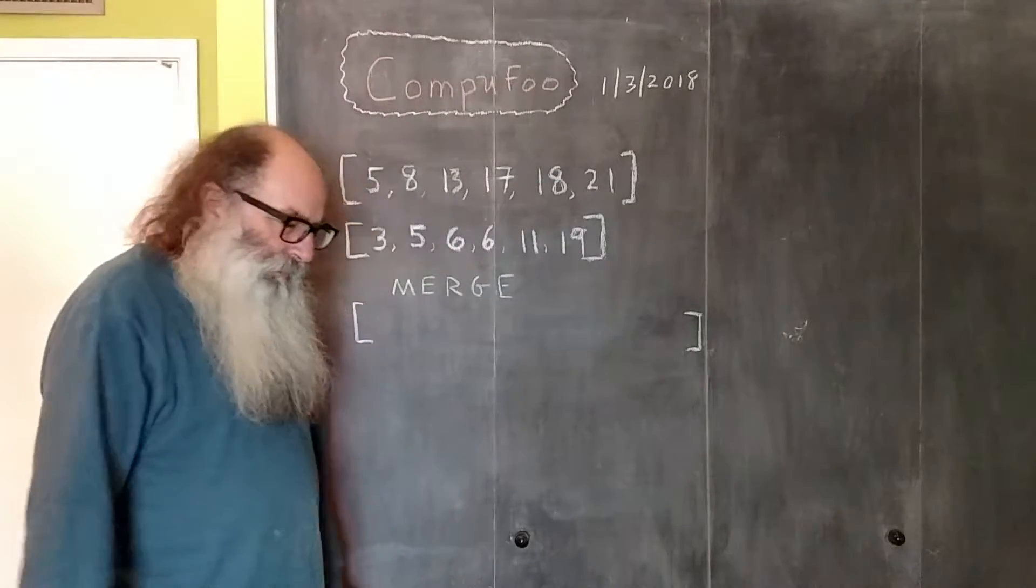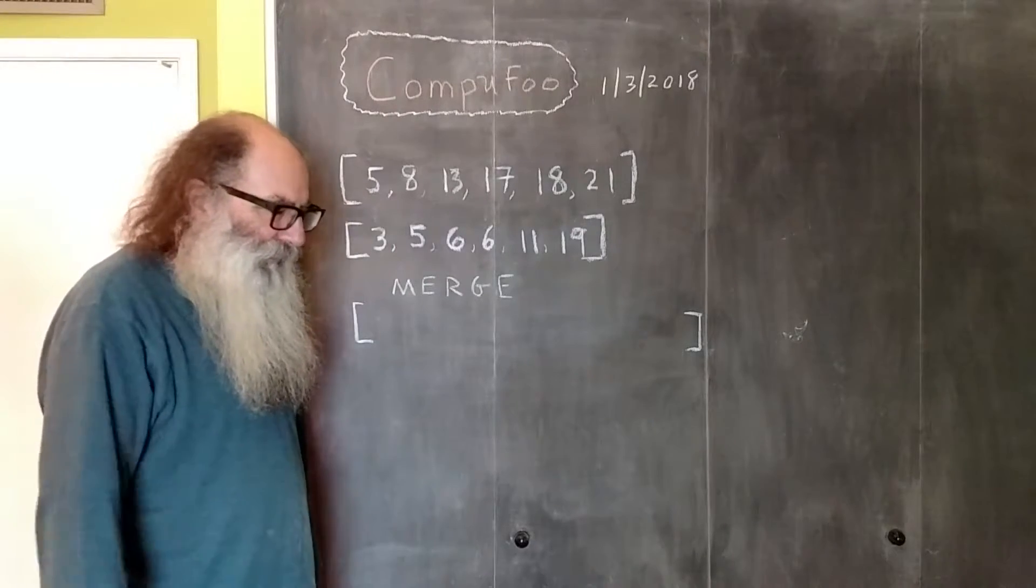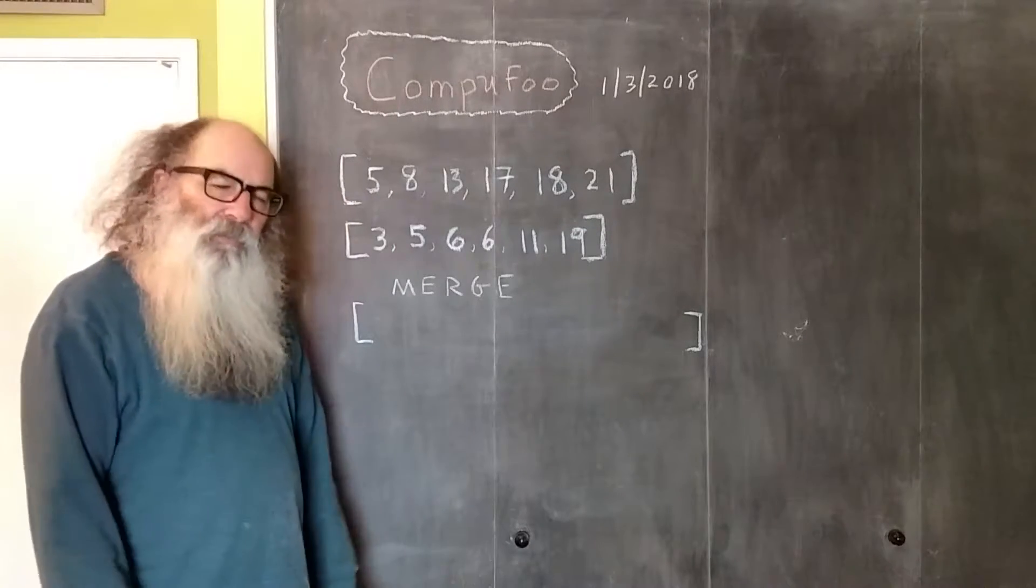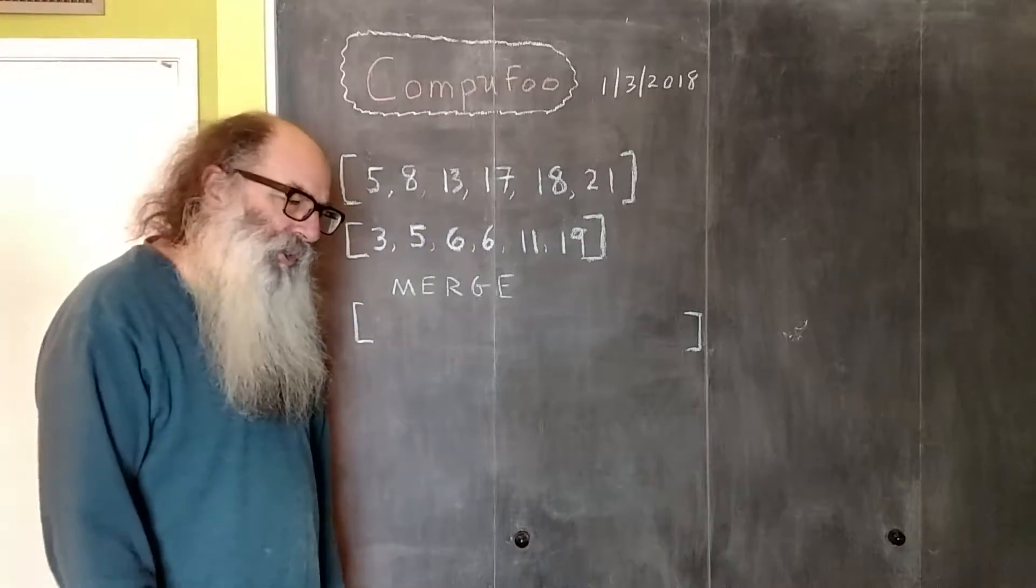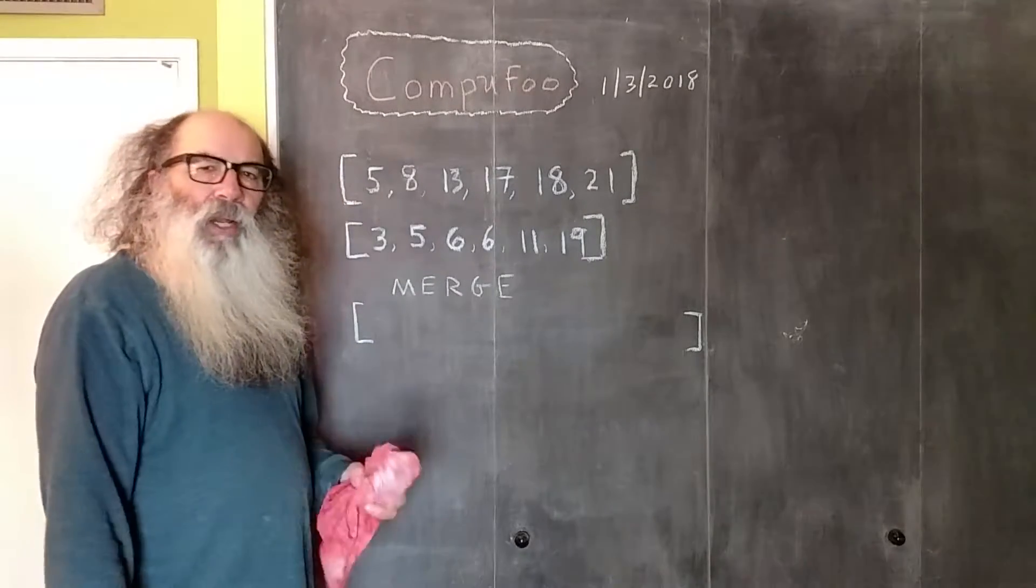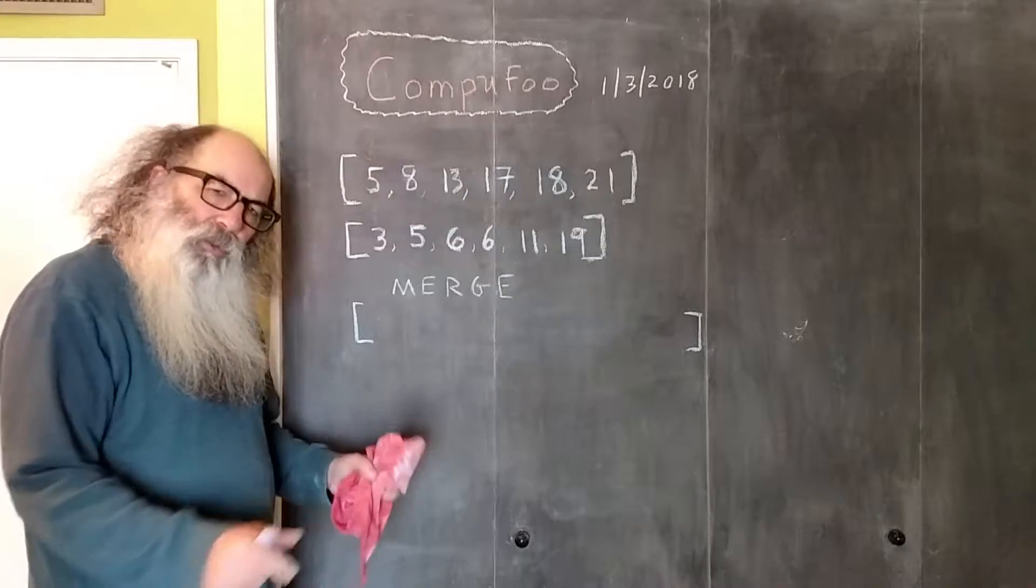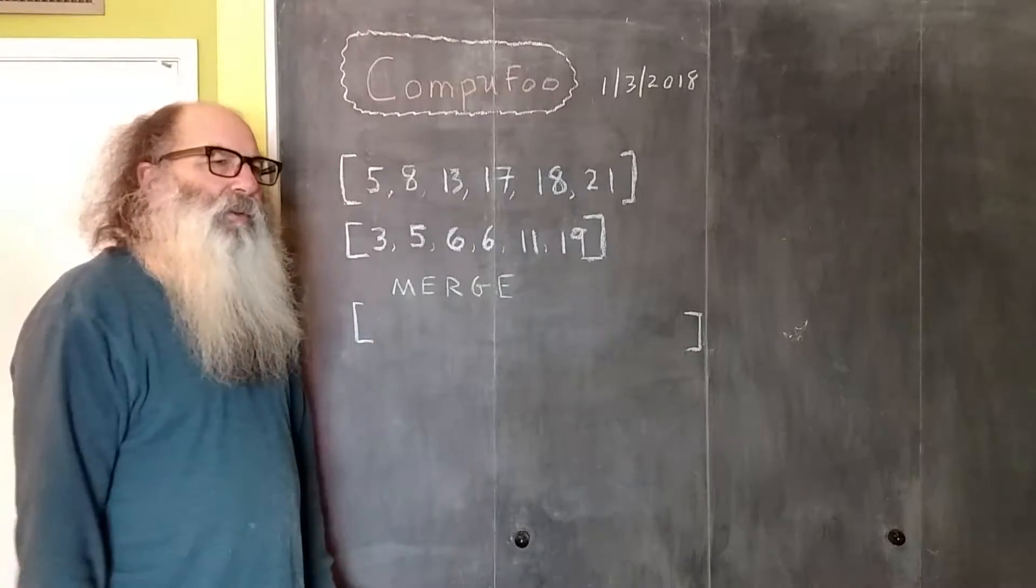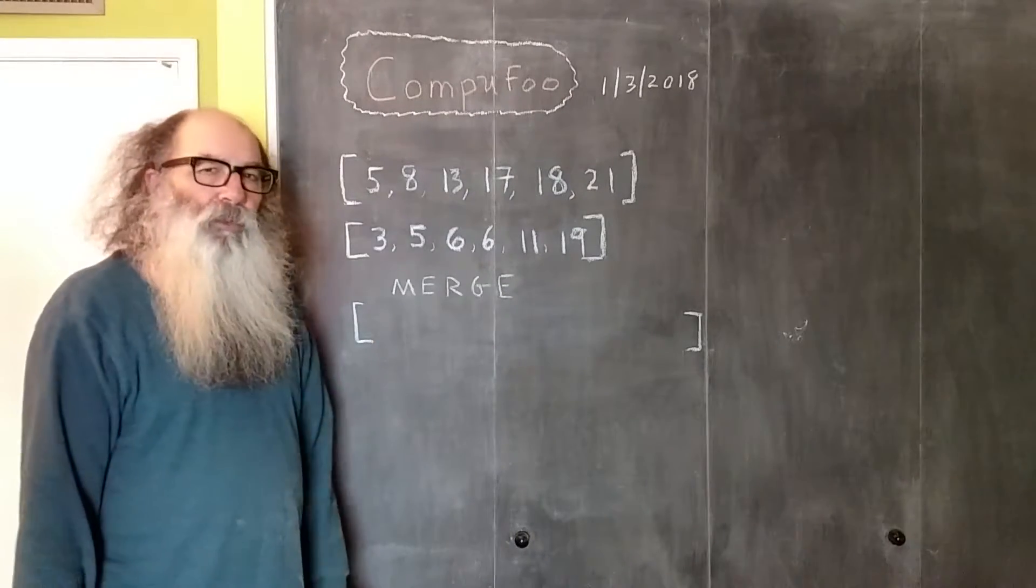The merge sort is recursive, and you can program it using recursion. Once you get down to these single element arrays, you go ahead and you start merging them together, and when you're all done, you end up with a sorted array.